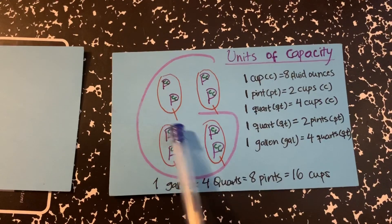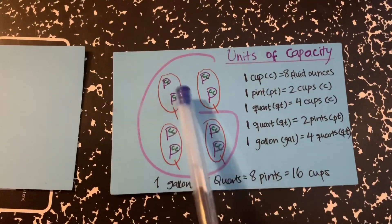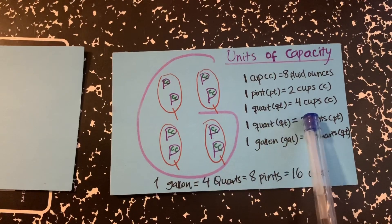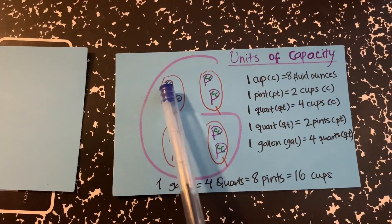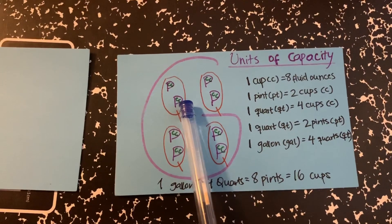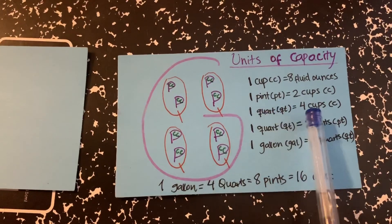Then you have the quart, the Q. Now 1 quart, how many C does it have? It has 2 here and 2 here. So in total, 4. So 1 quart is equal to 4 cups.